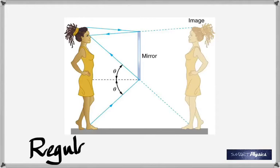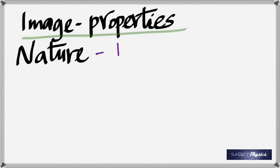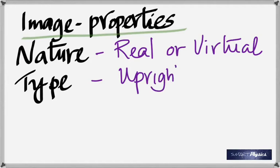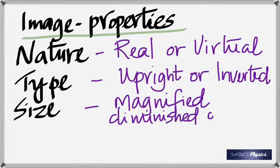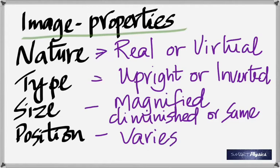That's regular reflection, from a plain mirror. The four properties of the image are: number one, the nature — an image could be real or virtual; number two, the type — it could be upright or inverted; number three, the size — magnified, diminished (smaller than the object), or the same size; and number four, position — there are several possibilities. In the last case, the position of the image was exactly as far behind as the object was in front.